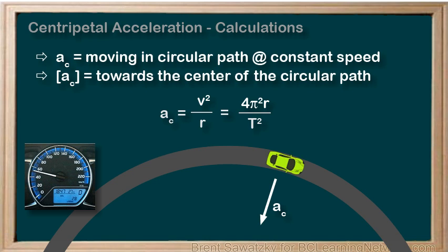If you're looking for a nice mathematical challenge, you can derive the first equation using your vector diagrams and a little trig. Then, the second equation can be derived from the first one, simply using the fact that the circumference of the circle is 2 pi r.